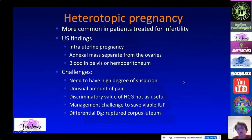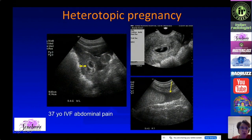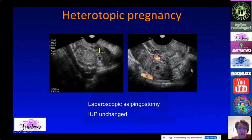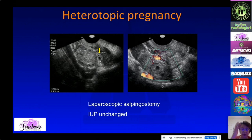Management is a challenge because most of these are fertility patients and you want to preserve the viable intrauterine pregnancy. For example, a patient who had IVF presented with abdominal pain. She had an IUP but also had complex fluid in Morison's pouch near the liver — hemoperitoneum. Careful examination revealed the ectopic pregnancy. They were able to remove the ectopic pregnancy while the IUP remained viable.